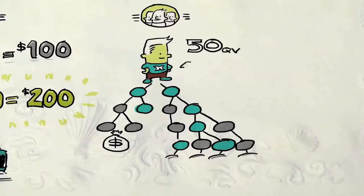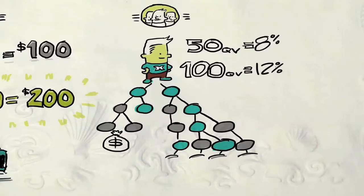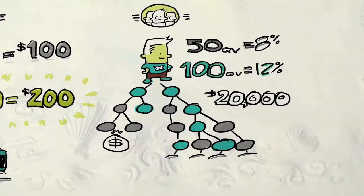Once again, you choose how much you want to earn from your pay leg. 8% if you're active with only 50 QV or 12% if you're active with 100 QV. The team bonus alone here can pay you up to $20,000 a week.